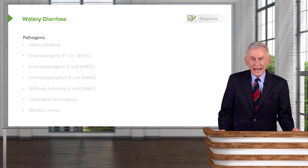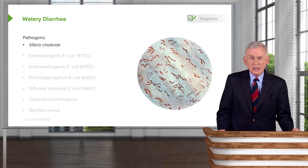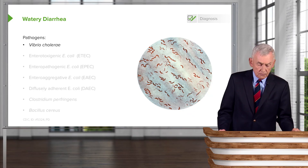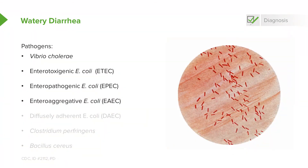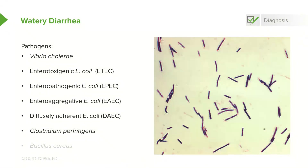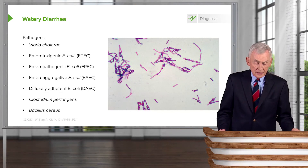Here's a short list of pathogens that can cause watery diarrhea. The most prominent is Vibrio cholerae, the cause of cholera. Then there are a series of Escherichia coli organisms: enterotoxigenic E. coli, enteropathogenic E. coli, enteroaggregative E. coli, and diffusely adherent E. coli — they all look alike under the microscope. There's also Clostridium perfringens, which can cause watery diarrhea. Since other Clostridia like Clostridium botulinum make toxin, it shouldn't surprise you that C. perfringens can make a bowel toxin. And Bacillus cereus is also a cause of watery diarrhea.